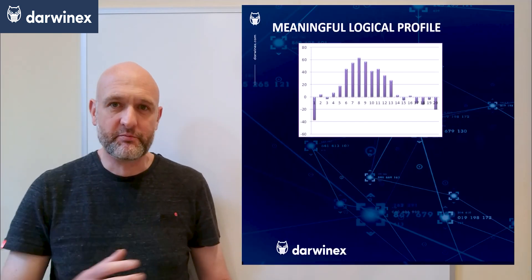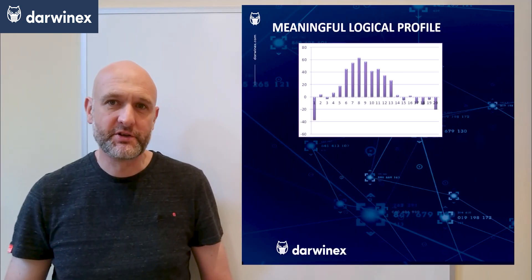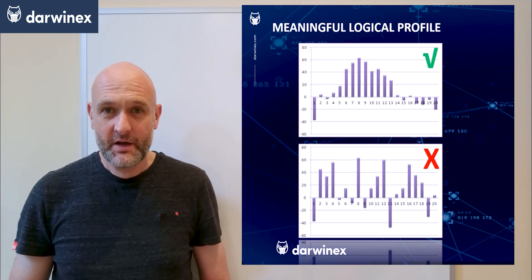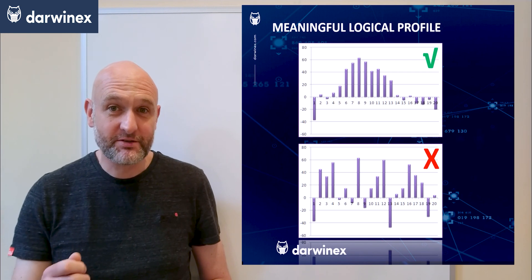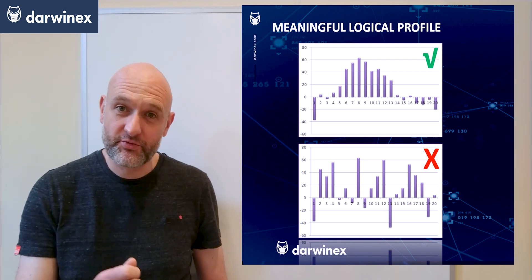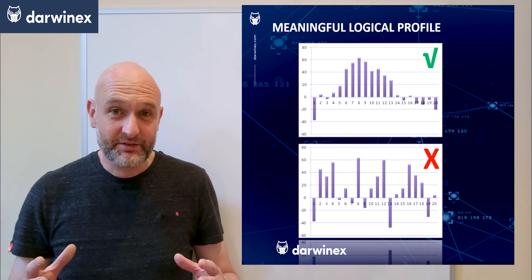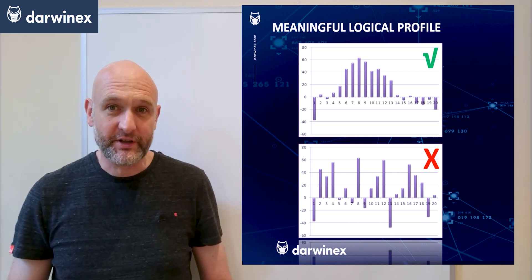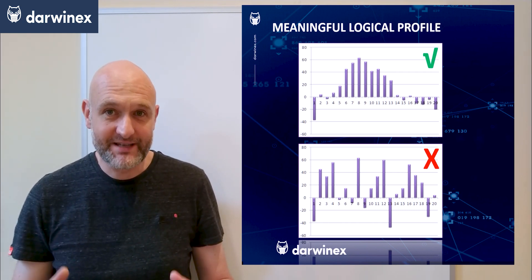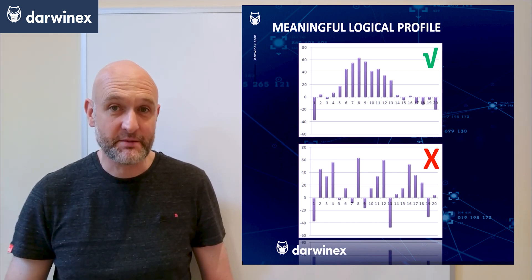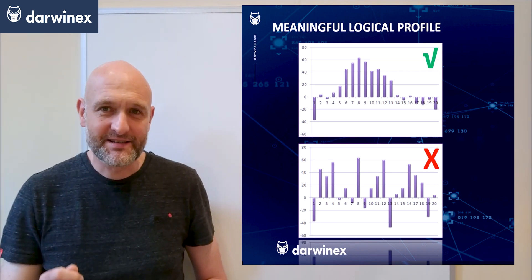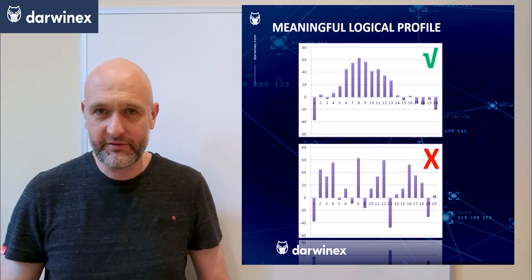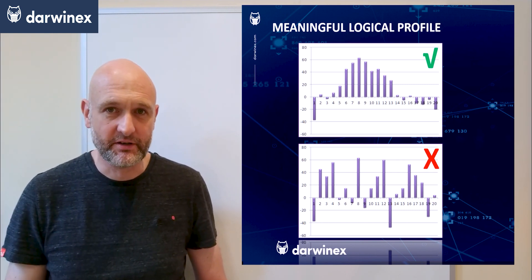We have our preferred type of profile at the top and underneath a far less desirable profile, but note how this does actually pass the rules of the previous test. There are more positive results than negative results, so that's good, but it does still illustrate a characteristic that we need to be aware of — and that's erratic results. Clearly these are far less meaningful, which is an immediate concern.